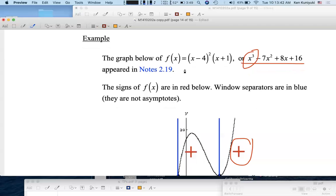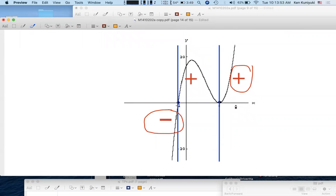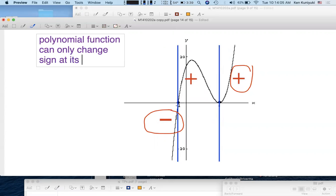If you know the factorization, then you can really know what's going on. The real zeros correspond to the x-intercepts. We see here they're four negative one. And these are the only places where the function can change sign. Remember, a polynomial function can only change sign at its zeros corresponding to the x-intercepts.